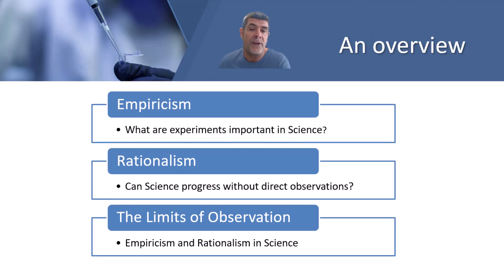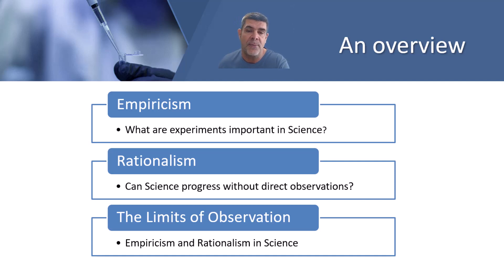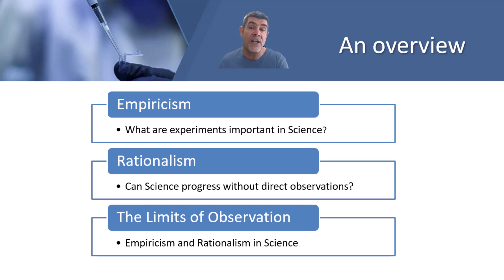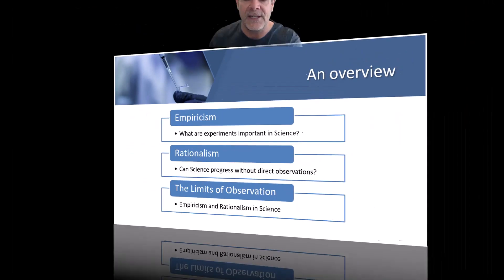We'll look at what empiricism is and how important experiments are in science, then at rationalism as a contrast to empiricism and whether science can progress without direct observations, and finally the limits of observation and the clash between empiricism and rationalism in science — and how we resolve that.